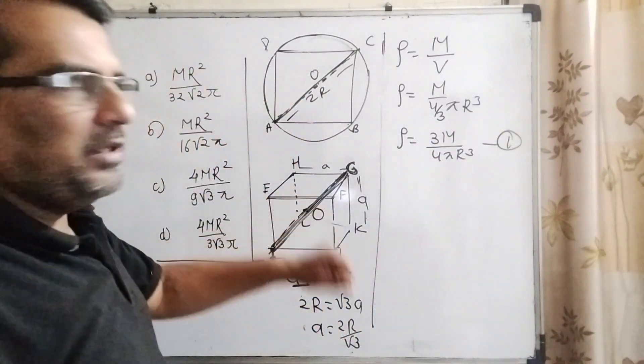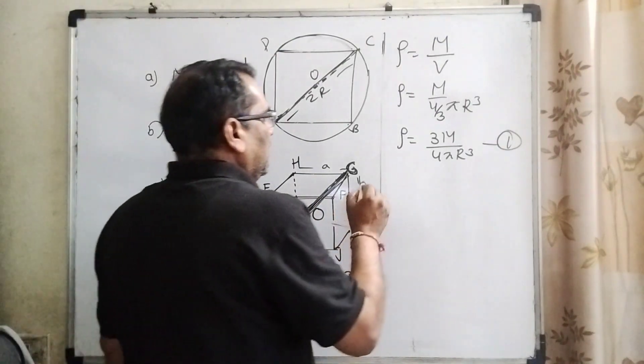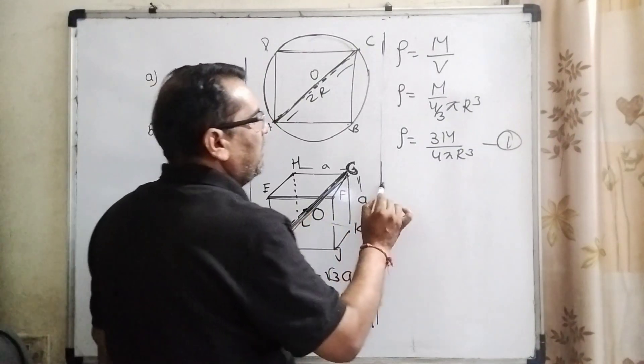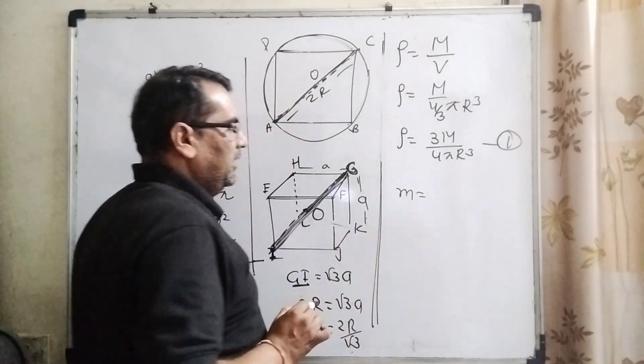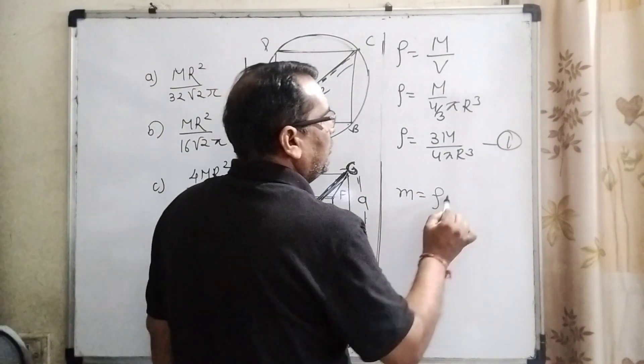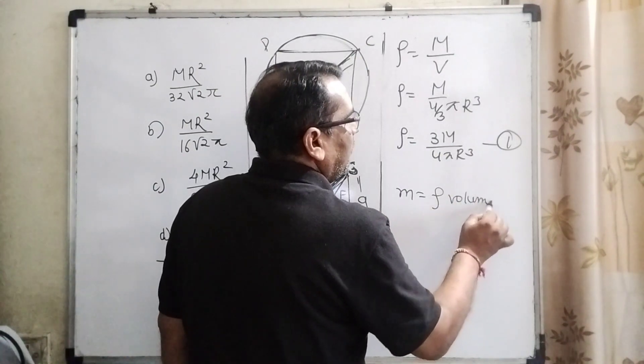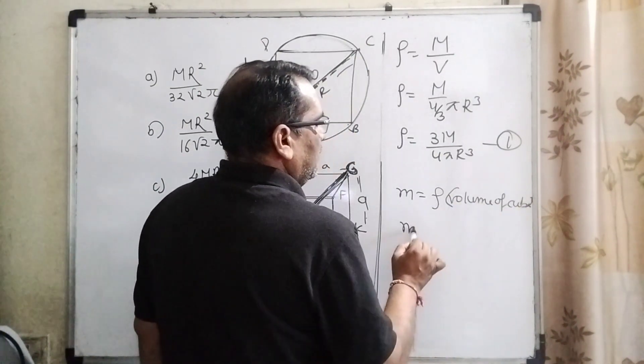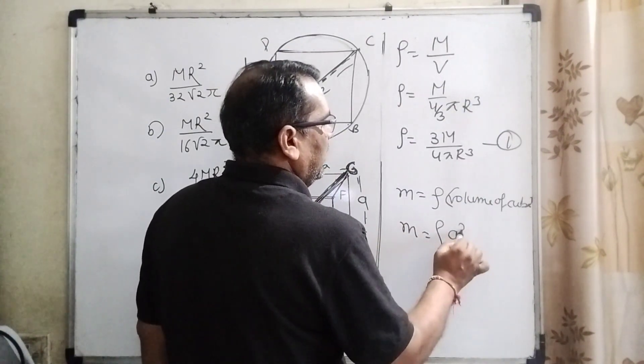Now density of the cube. Density of the cube is the same. Let the mass of this cube be small m. Then density times volume of cube. What is the volume of cube? Volume of cube is a³.